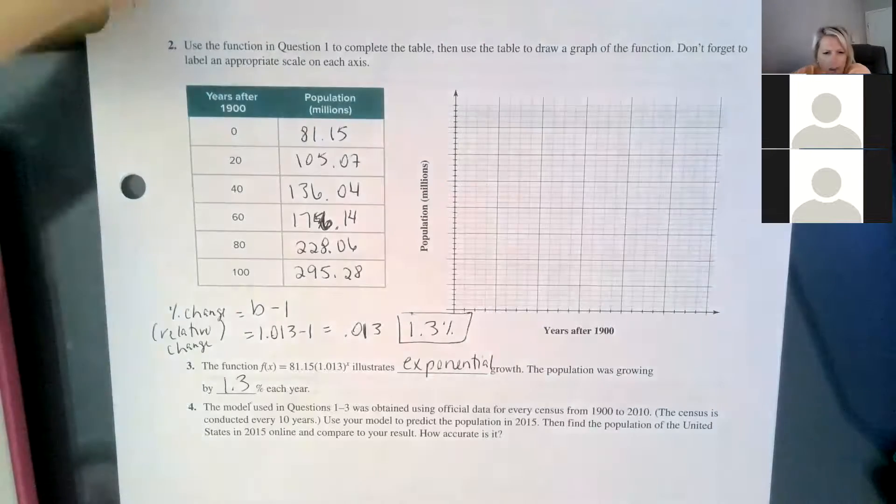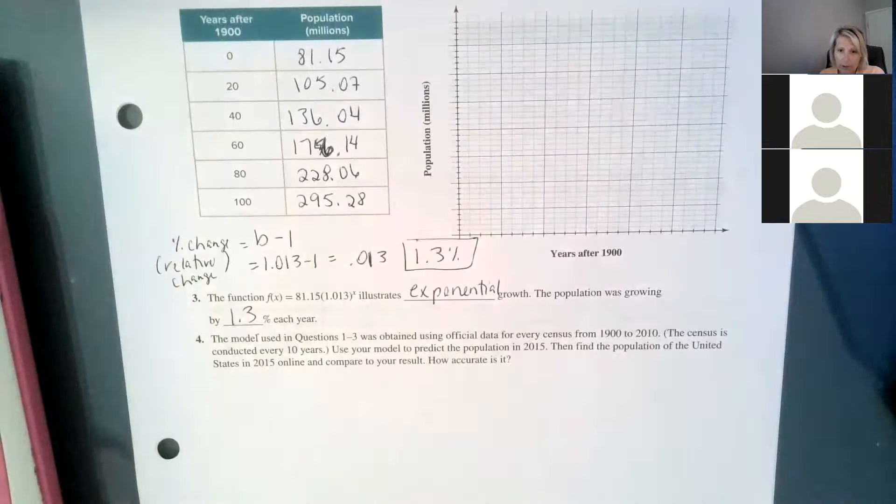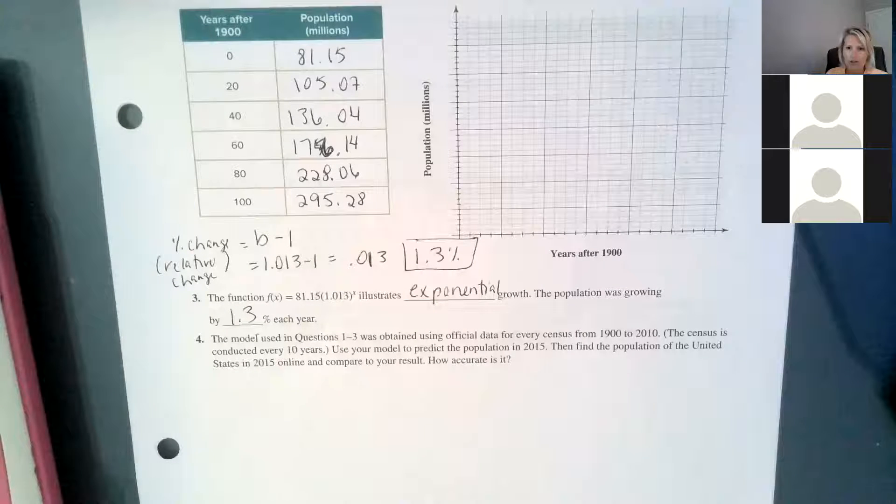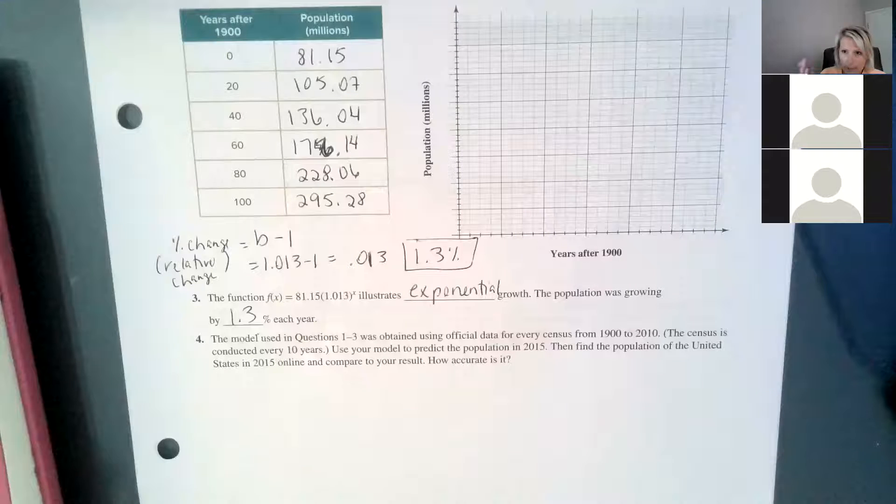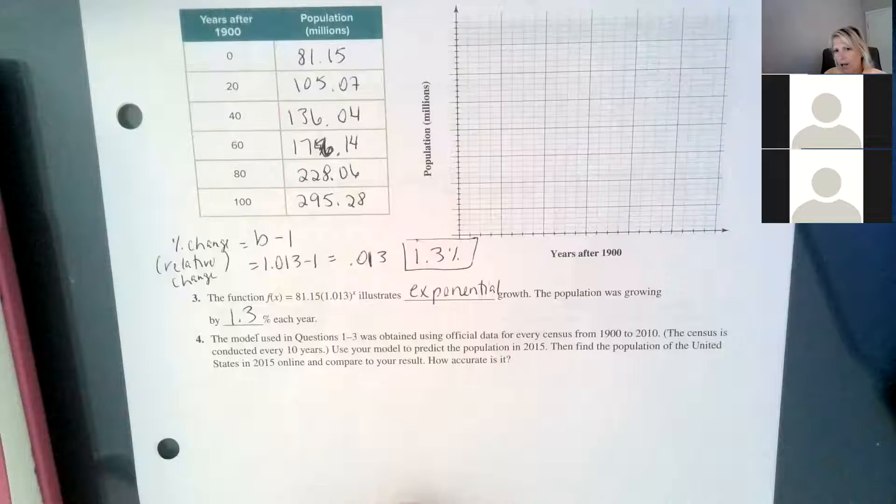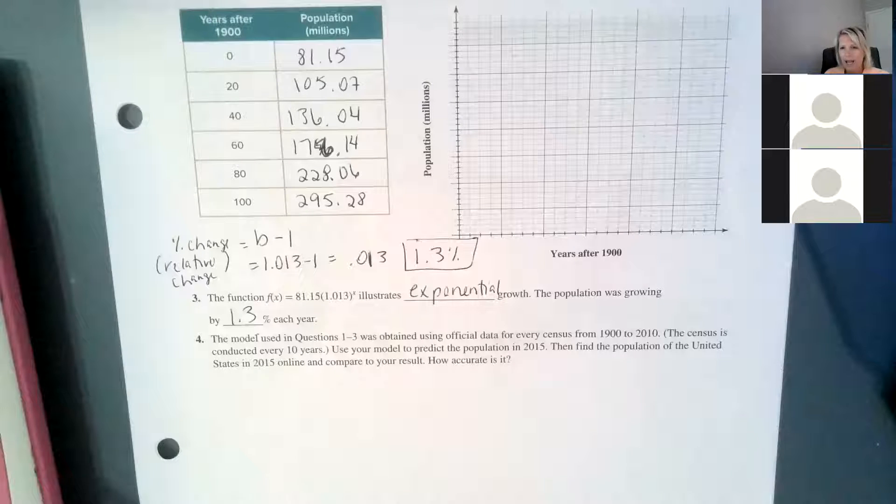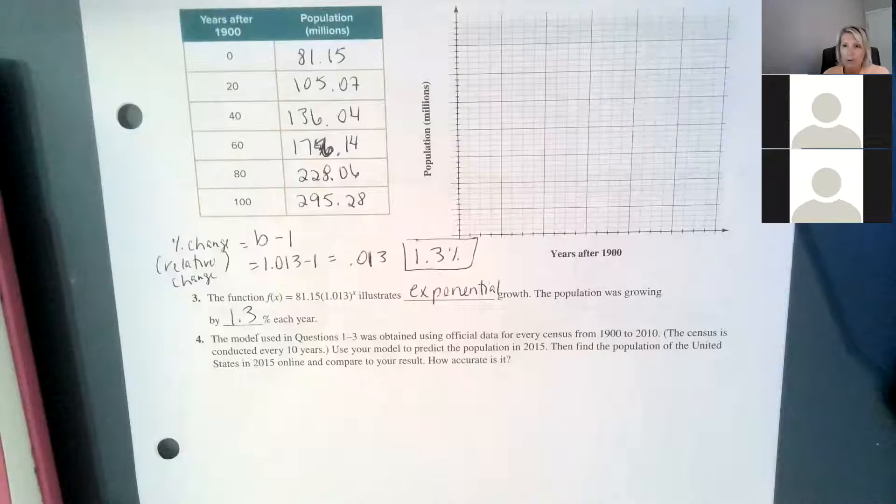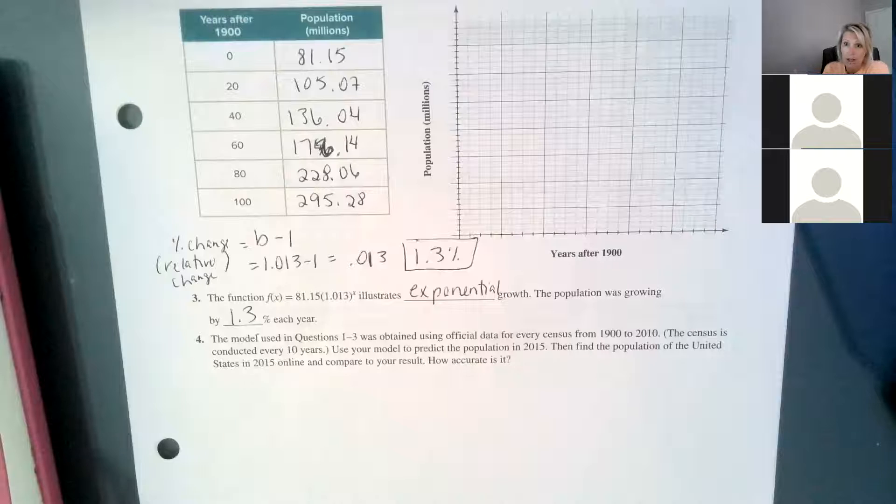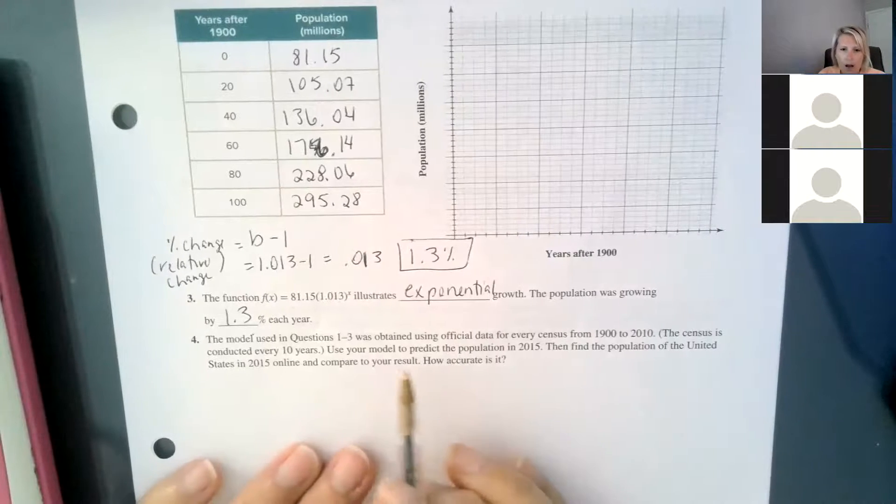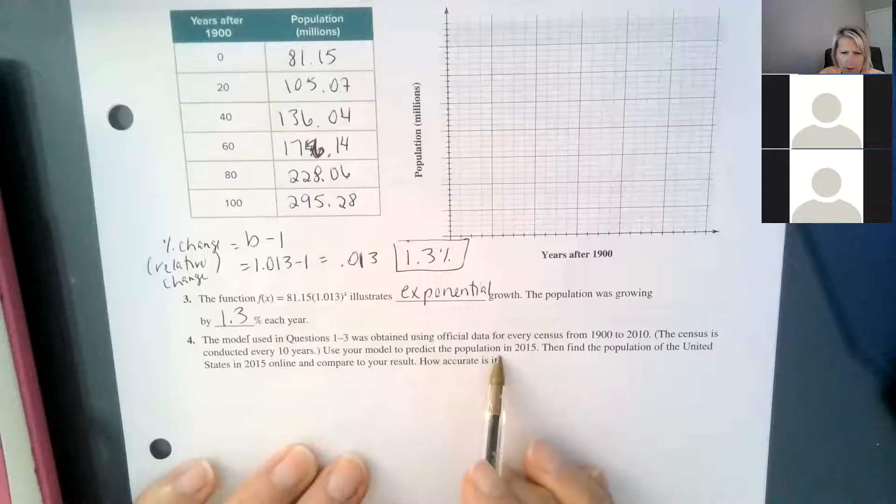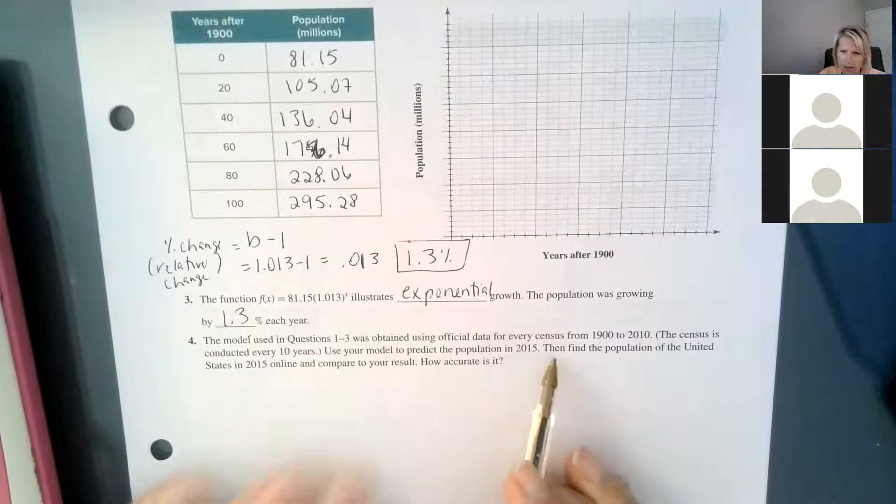Number four says the model used in question 1 to 3 was obtained using official data from every census from 1900 to 2010. And a census is where now they send it in the mail or whatever, and they ask you to answer questions about your household, or people used to kind of canvas and go door to door. But it's not very accurate because there's a fair amount of people that say they don't want to answer the questions. As citizens, you do not have to answer the census if you don't want to. But it says, use your model to predict the population in 2015.